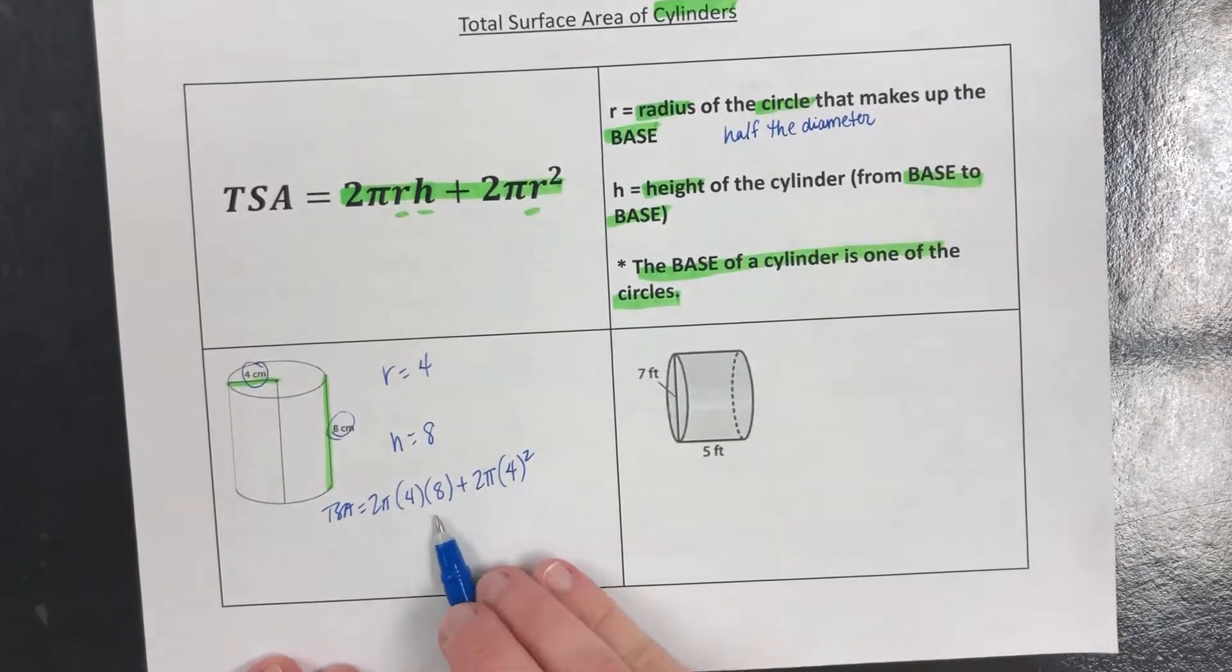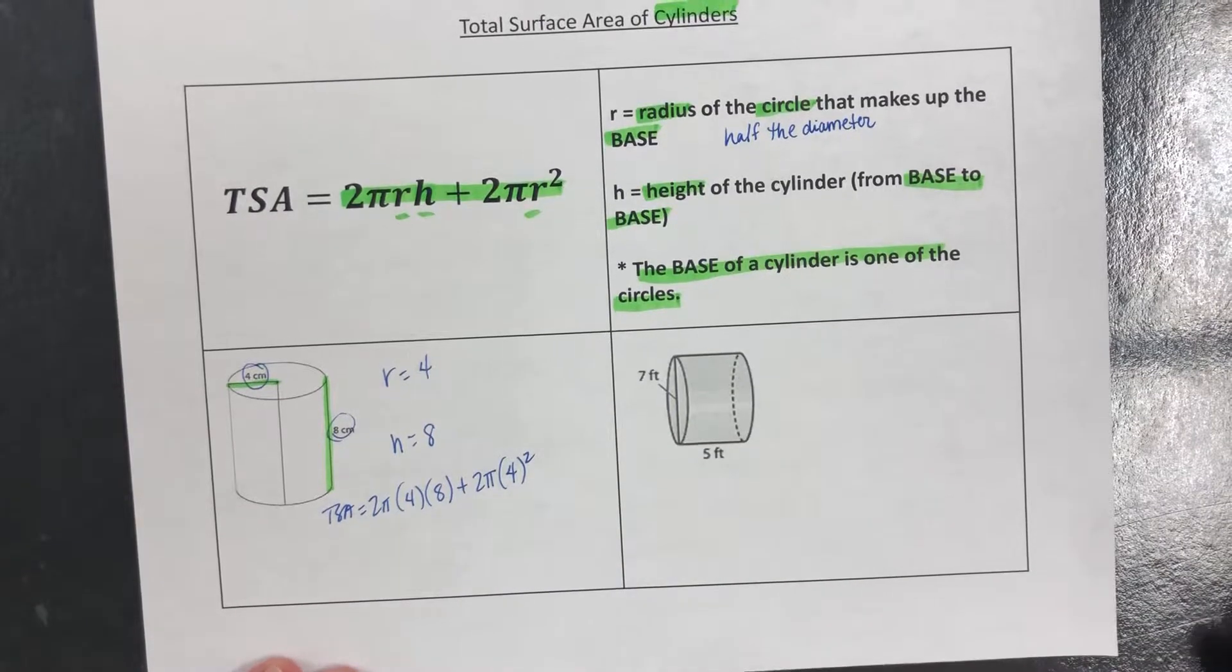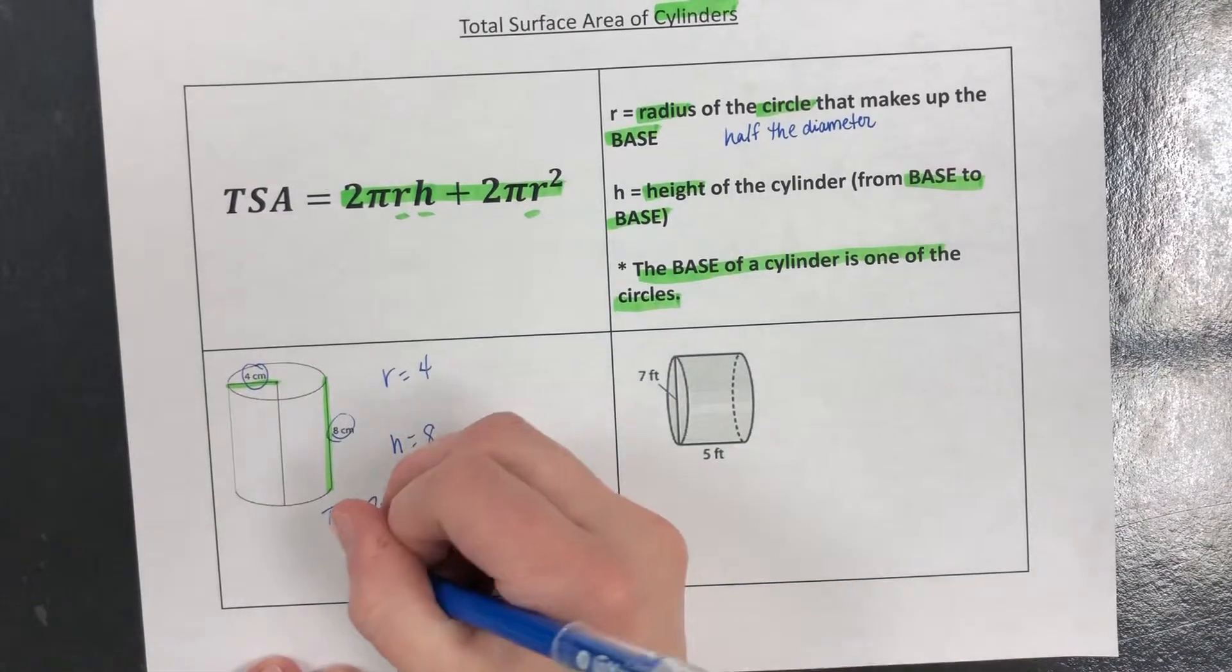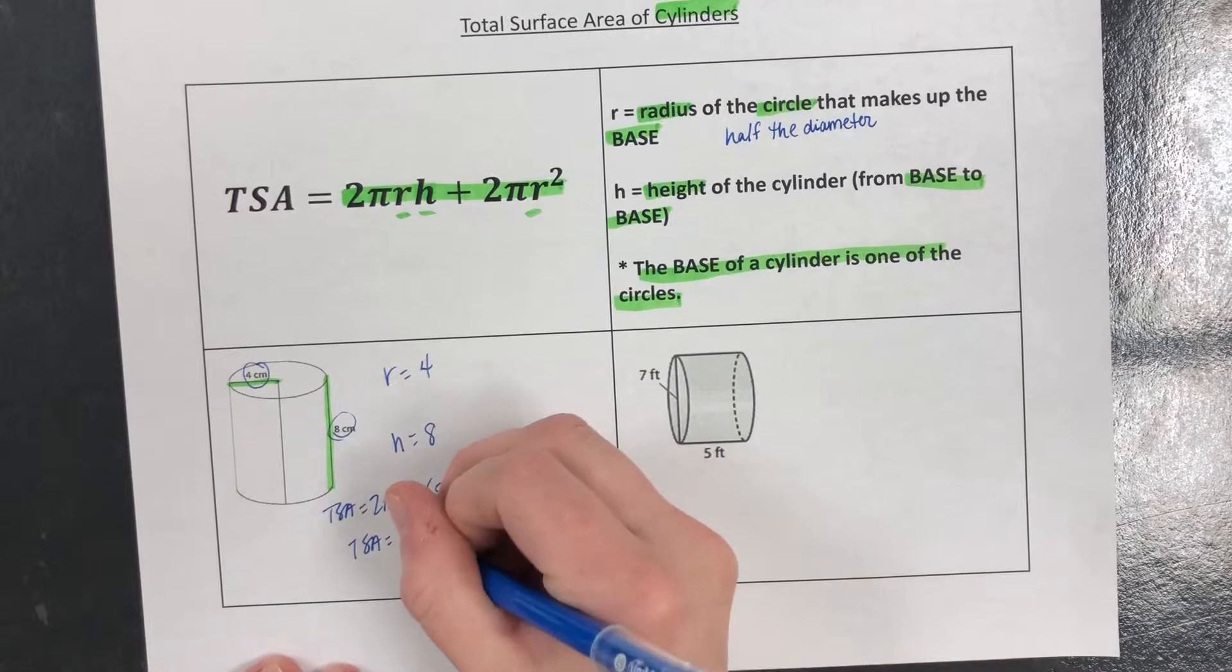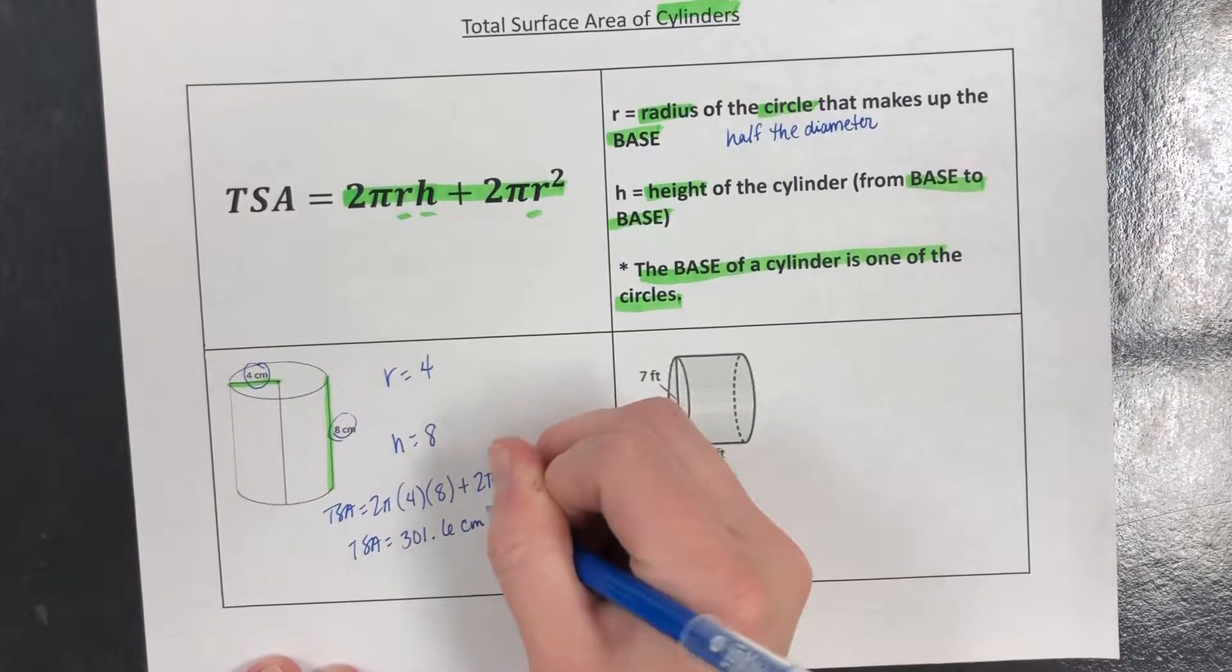2π times 4 times 8 plus 2π times 4 squared. And you should get a total surface area of 301.6 centimeters squared.